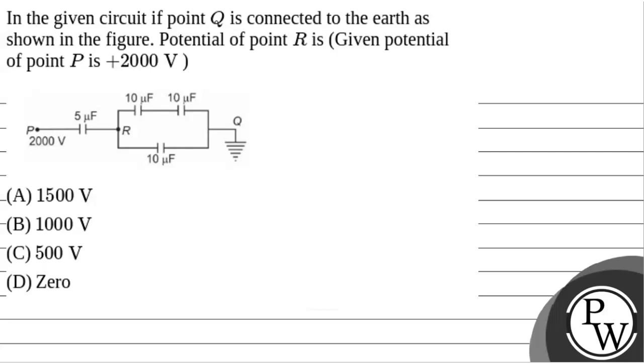Hello Vachor, let's read the question. The question says that in the given circuit, if point Q is connected to the earth as shown in the figure, potential of point R is given, potential of point P is plus 2000 volt.